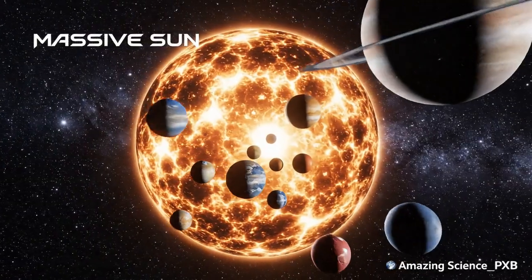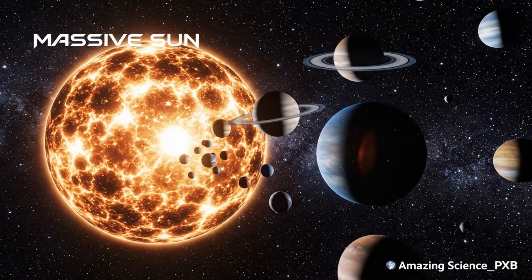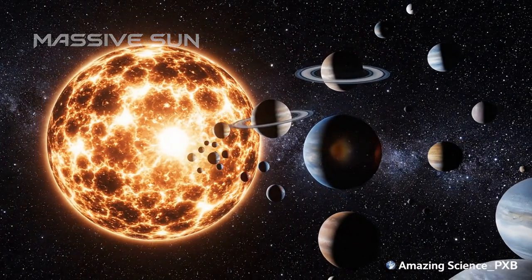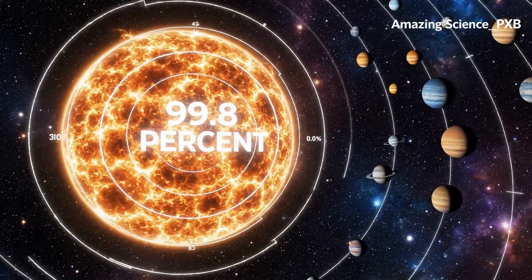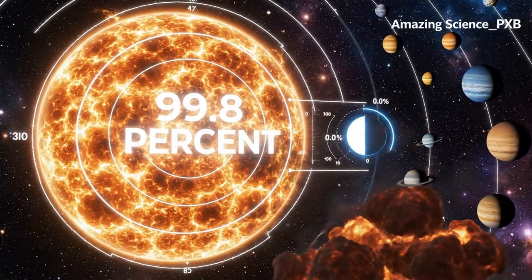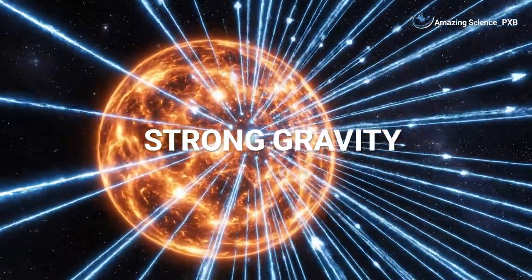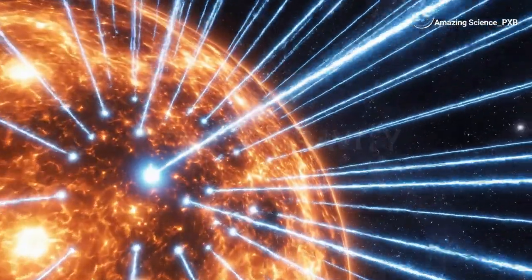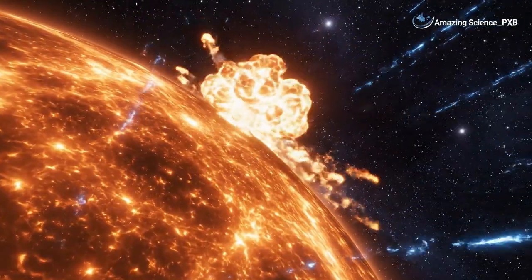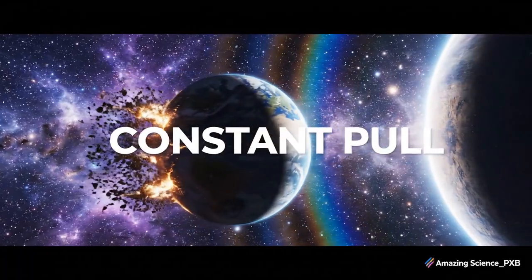The Sun's gravity is far stronger. The Sun holds 99.8% of solar system mass. More mass means stronger gravity. Every planet constantly feels this pull.